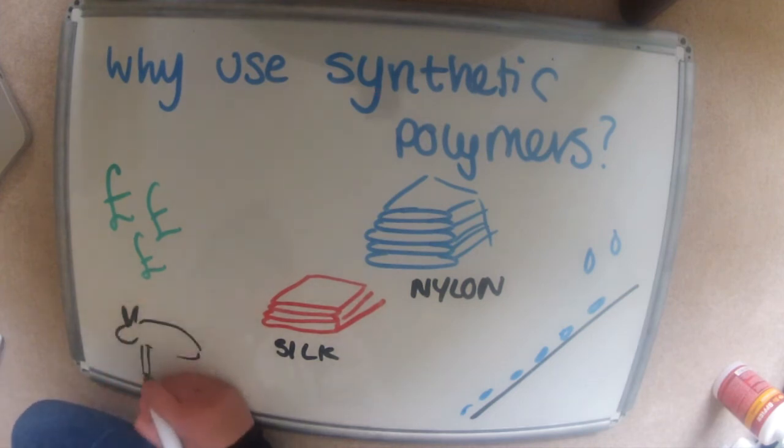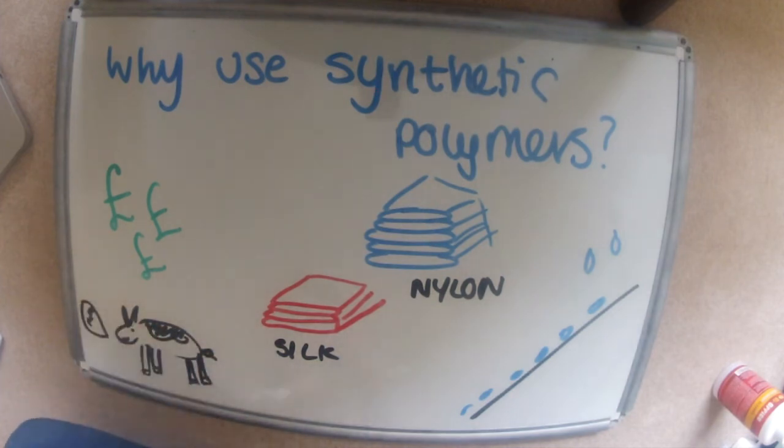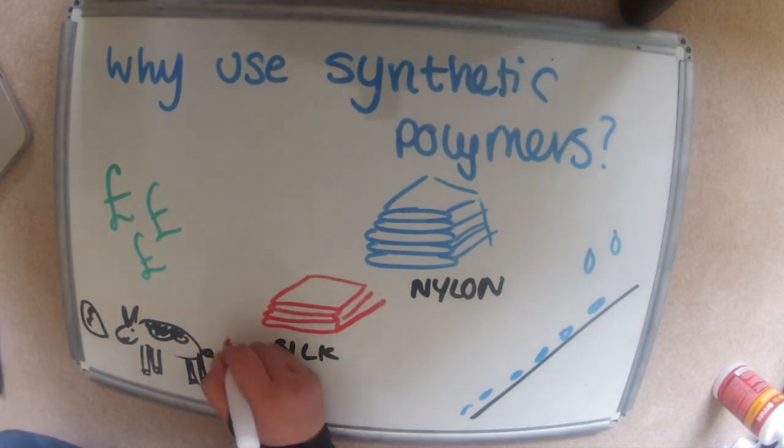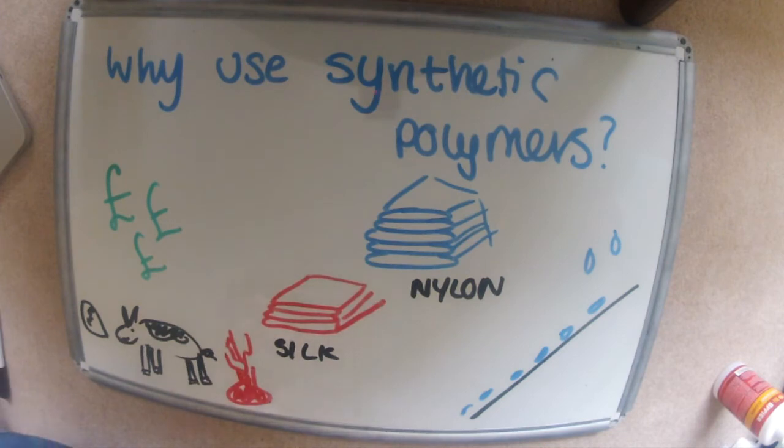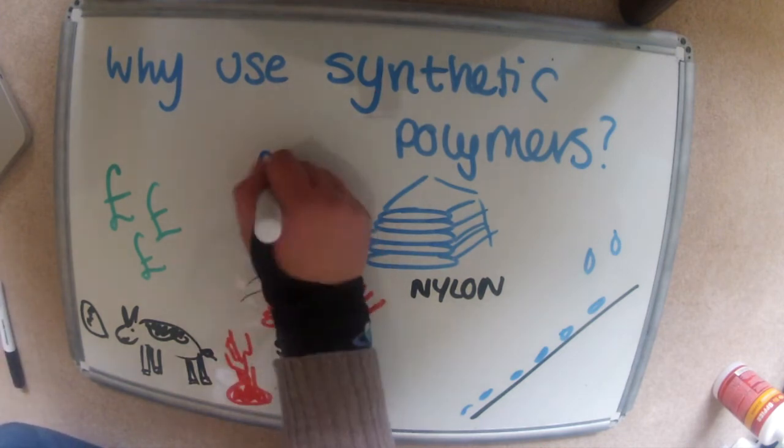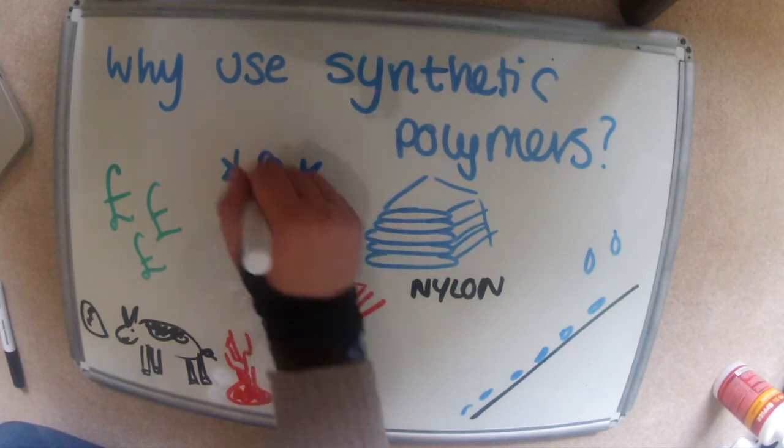PVC provides a vegan-friendly alternative to leather as well as the fact that tanning leather can produce a lot of chemicals, so it's a safer way to get the leather that people want. And polyester provides an entirely new material that can be used for things like coat linings.